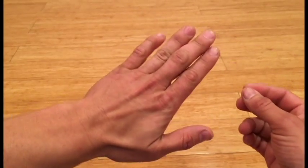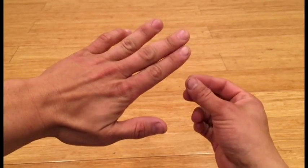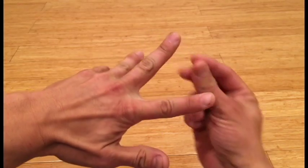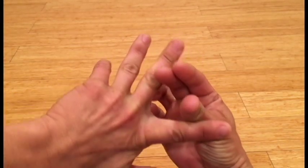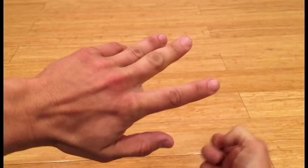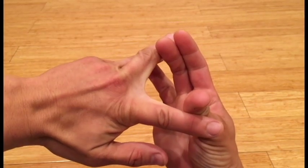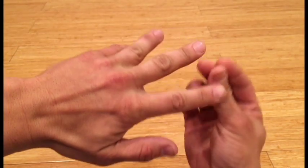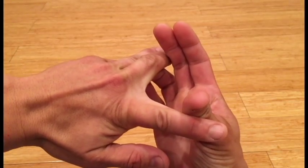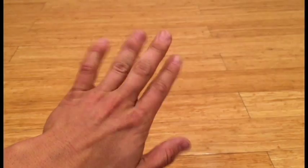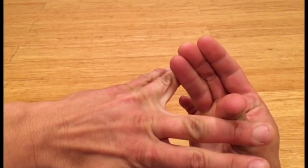So what we're gonna do is I'm gonna start with basically finger splits. So we're gonna hold for two seconds, splitting the fingers apart and then relax. Hold for two seconds, relax. Hold for two seconds and relax. You can do five on each set of fingers between these.